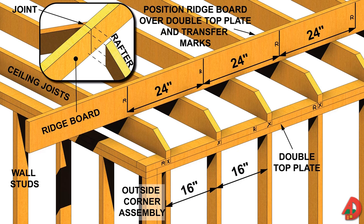Lumber used for the ridge board should be wider than lumber used for rafters. For example, for 2x4 rafters, a 2x6 ridge board should be used; and for 2x6 rafters, a 2x8 ridge board should be used. Ridge board must be at least 1 inch thick and must be wider than the cut end of the rafters. In some instances, for very long buildings, more than one ridge board may be necessary.